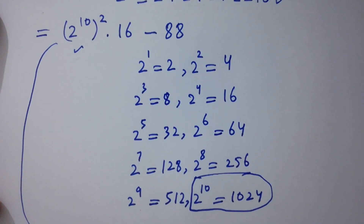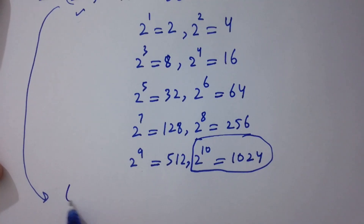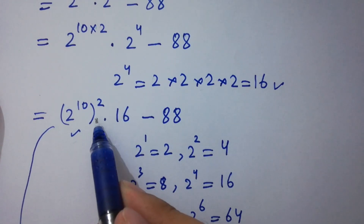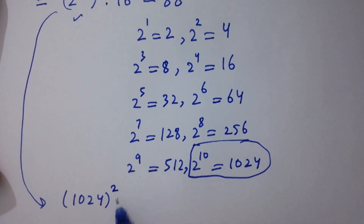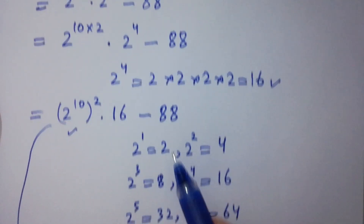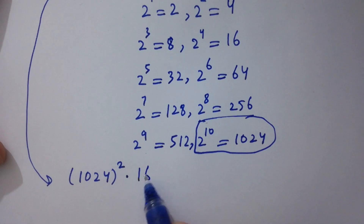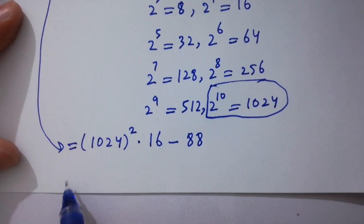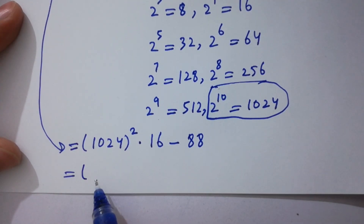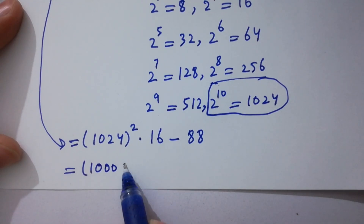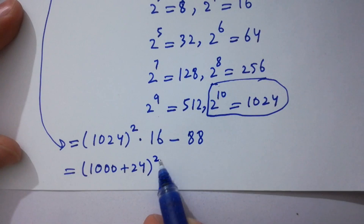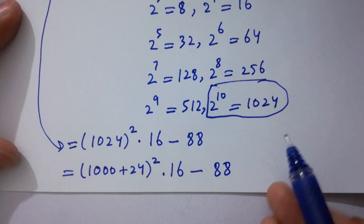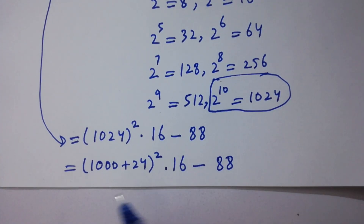So (2^10) squared equals 1024 squared. The expression becomes 1024 squared times 16, minus 88. We can write 1024 as 1000 plus 24, giving us (1000 + 24) to the whole power 2, times 16, minus 88. Apply the formula of (a + b) whole squared.